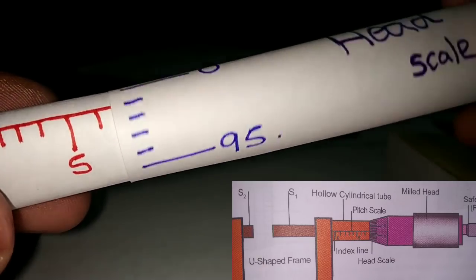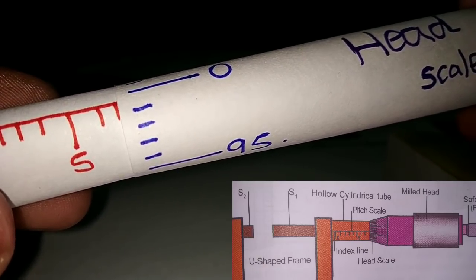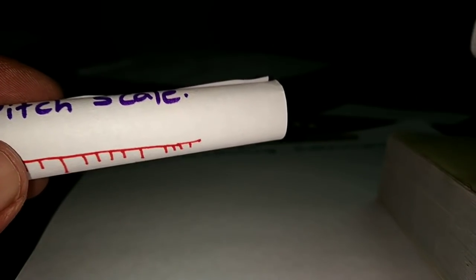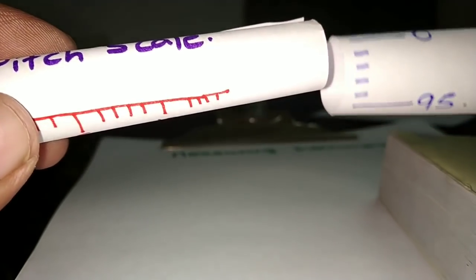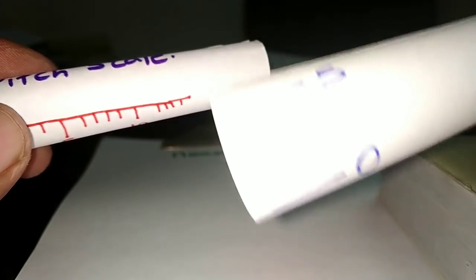If we look at the head scale, it is 0.01mm. Looking at the head scale overall, it is 0.01mm. This is the head scale — if we look at it, it is 0.5, 10. Here it is 0.5, 10.